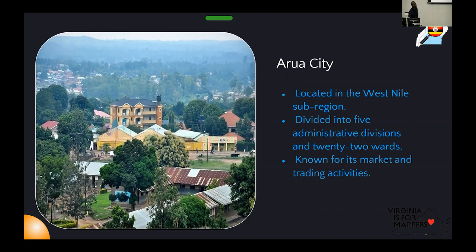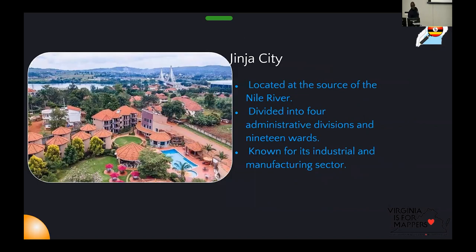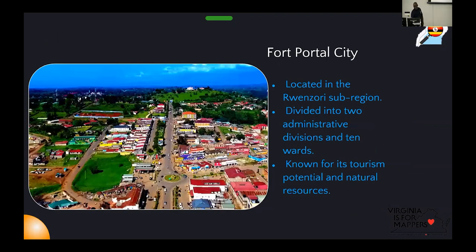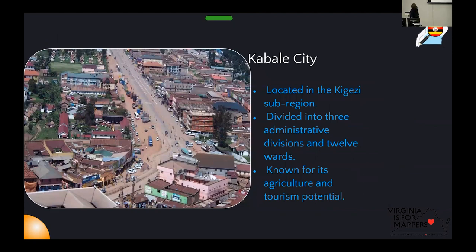We have cities like Arwan City, which is in the western sub-region, with five divisions and about 22 wards. We have Ginger, which has the source of denial, with four divisions and 19 wards — also known for its industrialization. We have Fort Quoto in the Razzoli, and Mbali City, which has three divisions and 12 wards.